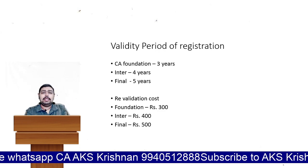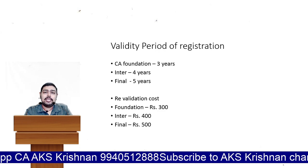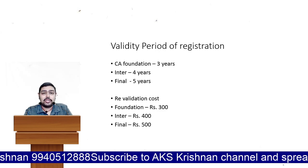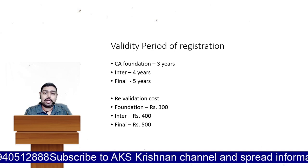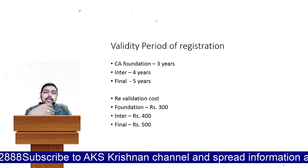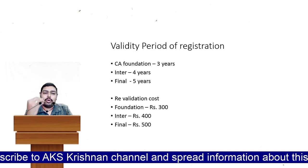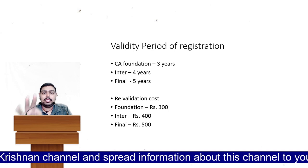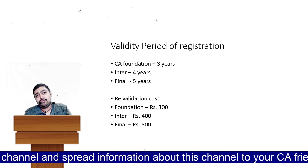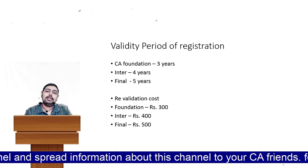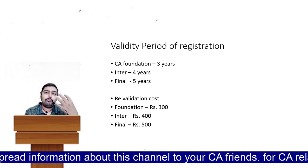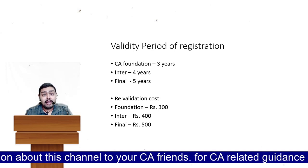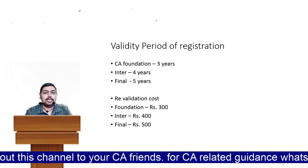First, you should understand the validity period. If you have already registered and many years have elapsed, you need to revalidate. Revalidation does not mean you have to pay huge fees again like ₹9,000 for Foundation or ₹18,000 for Inter. Just check your validity. If you registered for Foundation, it is valid for three years; after that, pay ₹300 for revalidation. For Inter, if four years have elapsed, pay ₹400. For Final, if five years have elapsed, pay ₹500.